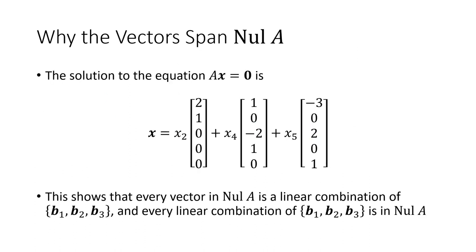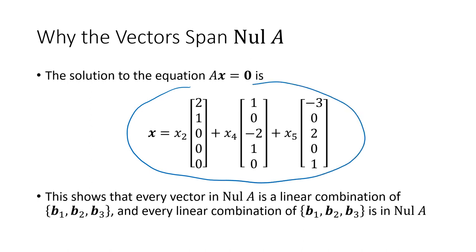That's only half of what 'basis' requires. We also need the vectors to span the null space. The parametric solution tells us that every solution x looks like x = x2·b1 + x4·b2 + x5·b3, which is exactly a linear combination of those three vectors. This shows every vector in null(A) is a linear combination of b1, b2, b3, and every such linear combination is in null(A), so they span the null space.